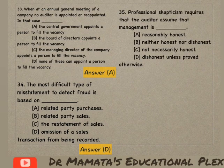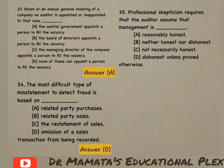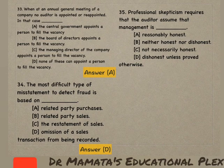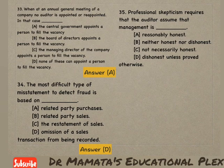Next question: Professional skepticism requires that the auditor assume that management is — reasonably honest, neither honest nor dishonest, not necessarily honest, or dishonest unless proved otherwise.